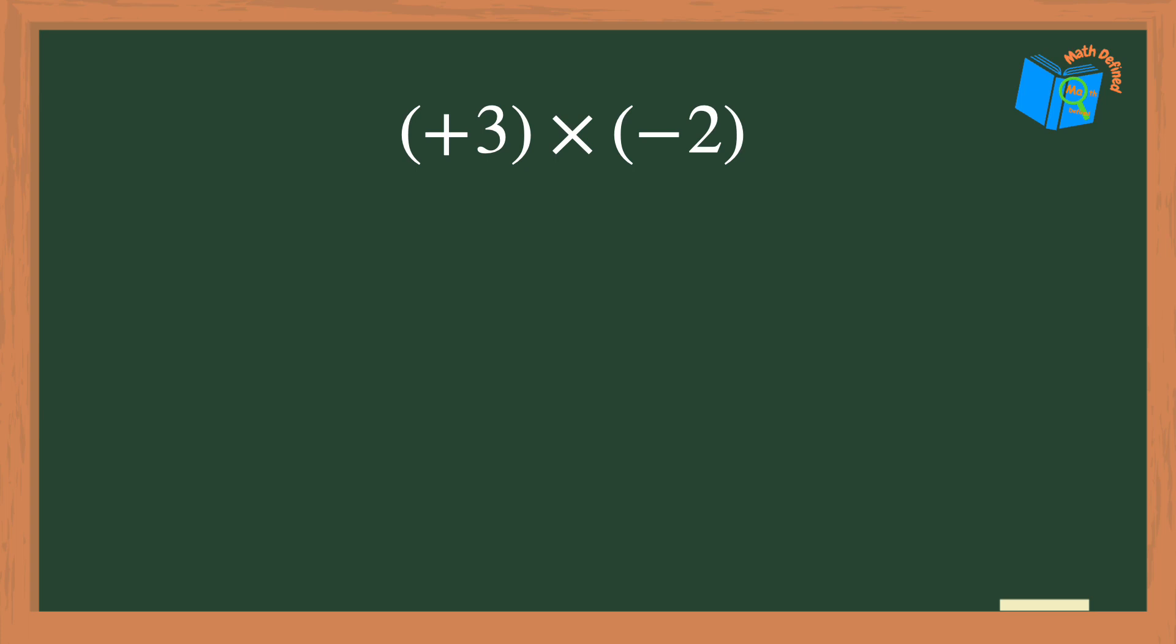Let's start with positive 3 times negative 2. Now what I find important to do as a teacher is to first show my students what all of these math symbols really mean. So let's look at this positive 3 first. The positive 3 here means to add 3. The multiplication sign means groups of and the negative 2 is just negative 2.